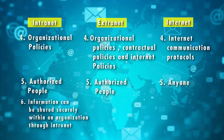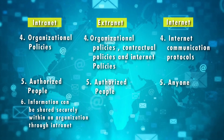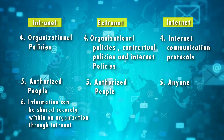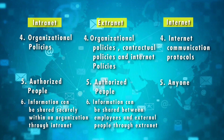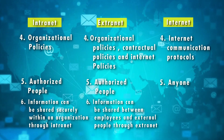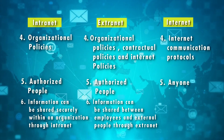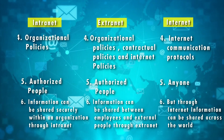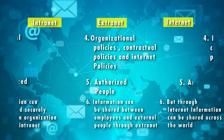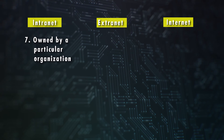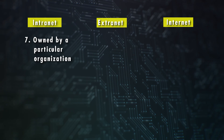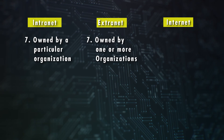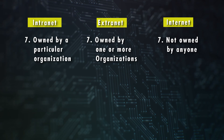Information can be shared securely within an organization through intranet. Information can be shared between employees and external people through extranet, but through internet information can be shared across the world. Intranet is owned by a particular organization, extranet is owned by one or more organizations, but internet is not owned by anyone.